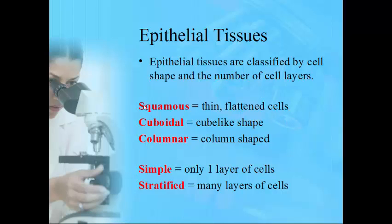Epithelial tissue is classified by the number and shape of cells. The first three classifications reference shape: squamous cells are very flat and thin — like a pancake; cuboidal cells are shaped like a cube; and columnar cells are column-shaped, like a column on a building. The last two reference number: simple refers to one layer only, while stratified means two or more layers — 'stratum' is another word for a layer.